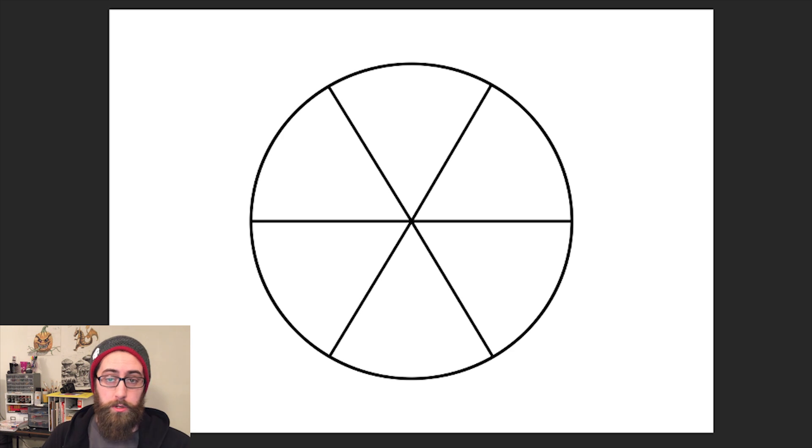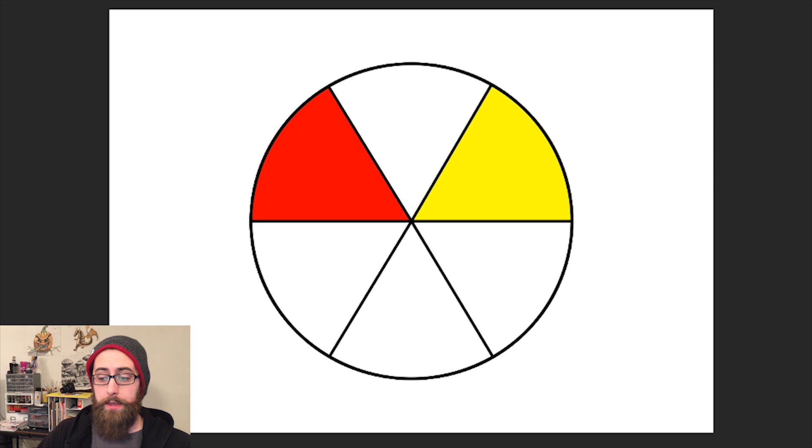Now here we have our blank color wheel and we're going to start by looking at the primary colors: red, yellow, and blue.